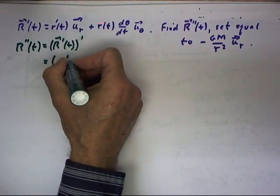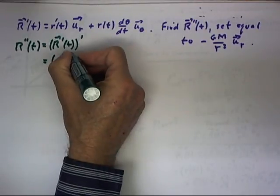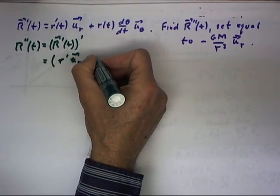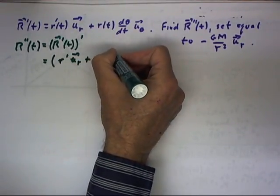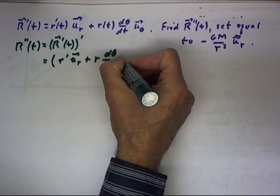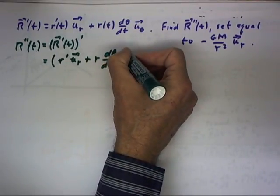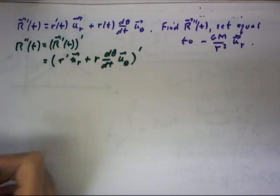When I write little r, I just mean the function little r of t times ur plus r times d theta dt times the u theta vector prime.